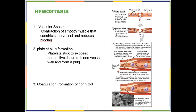Hemostasis is a possible open-ended exam question. There are three steps: vascular spasm, platelet plug formation, and coagulation. If you get a break in a blood vessel, the smooth muscle in the vessel wall constricts, narrowing the diameter so less blood leaks out. Then platelets stick to the damaged vessel wall where connective tissue is exposed, and they release chemicals that attract more platelets, forming a temporary plug. That leads to coagulation — the formation of a clot. Keep plug and clot separate: the clot is a sturdier, longer-lasting structure than the platelet plug.